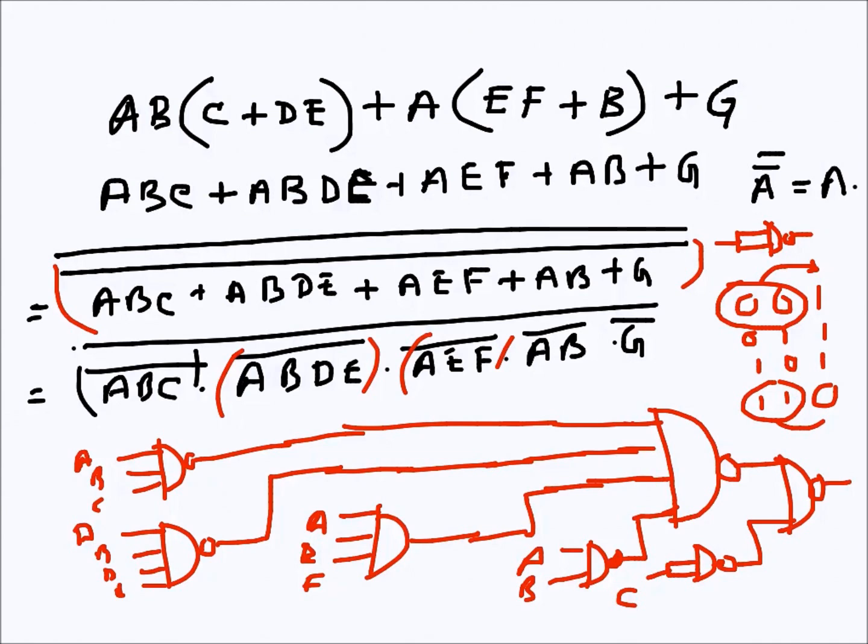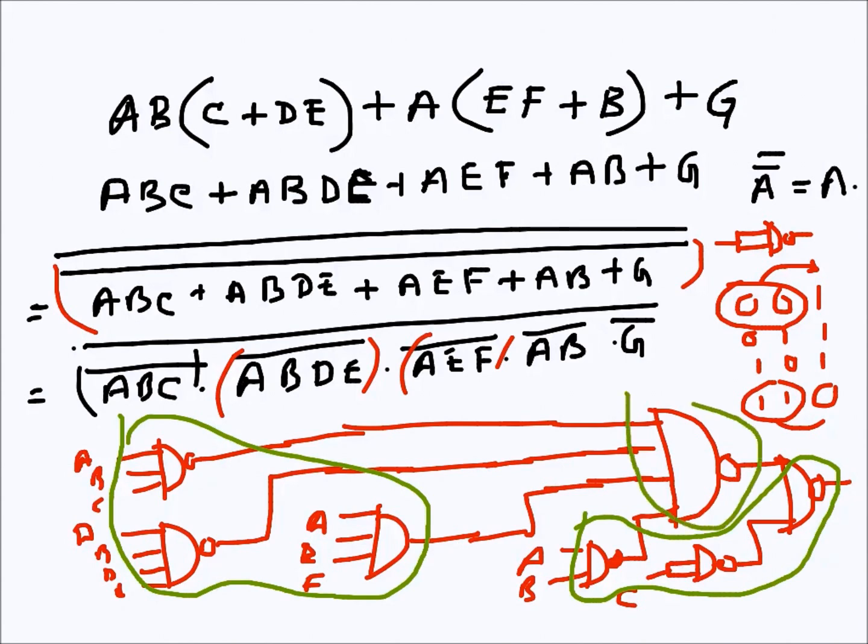...one IC consisting of three-input NAND gates, and then another IC consisting of two-input NAND gates, and then one IC consisting of four-input NAND gates. Four-input NAND gates—so one 16-pin IC will have two four-input NAND gates, so one IC there.